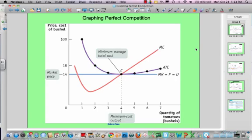Minimum average total cost is C. It's also the minimum cost output, and it is also the point up to which this producer in the perfectly competitive market is going to want to produce because it produces up to the point where marginal cost equals marginal revenue.